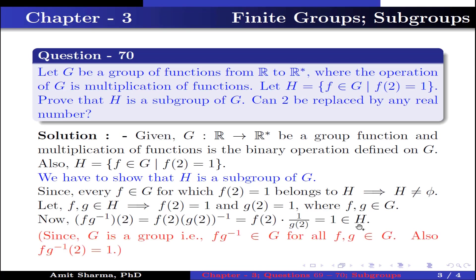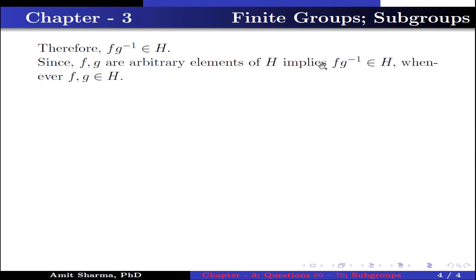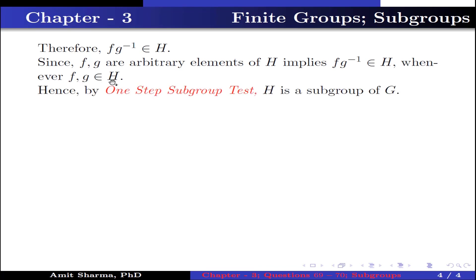This is because g is a group, so fg⁻¹ belongs to g for all f, g in g, and also (fg⁻¹)(2) = 1. Therefore fg⁻¹ belongs to h. Since f and g are arbitrary elements of h, this implies fg⁻¹ belongs to h whenever f, g belong to h. Hence, by the one-step subgroup test, h is a subgroup of g.